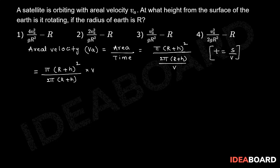So here pi pi cancel, so aerial velocity which is equal to r plus h by 2 into the root over this is gr square by r plus h.